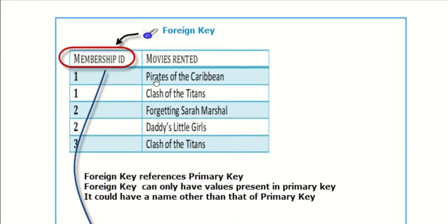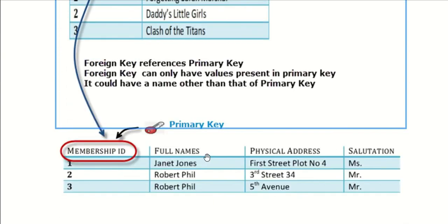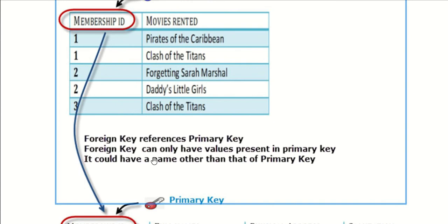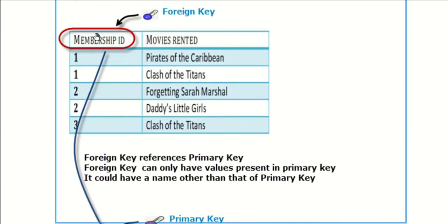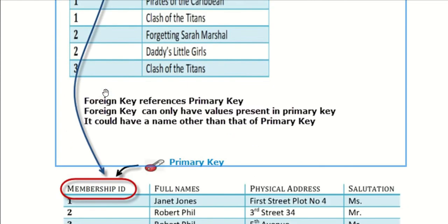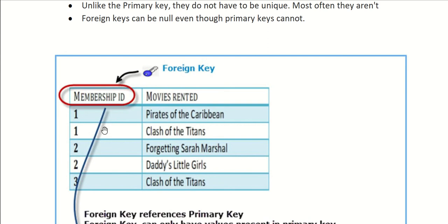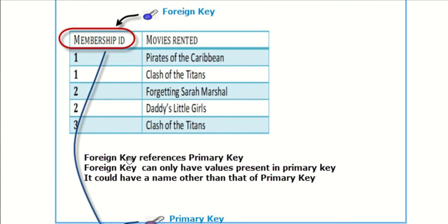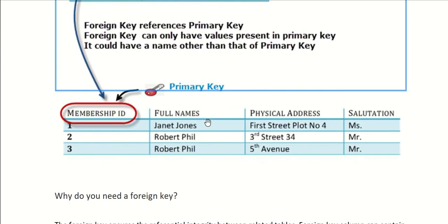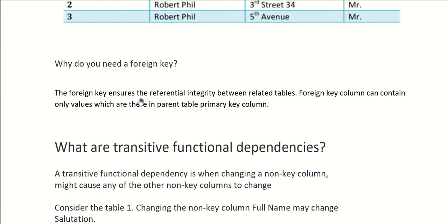Diagrammatically, membership_id is the foreign key for the movies rented table and it references the member table's membership_id. Foreign key can only have values present in the primary key — if you try to insert a value not in the parent table, the database management system will throw an error to ensure referential integrity. The foreign key ensures referential integrity between related tables.